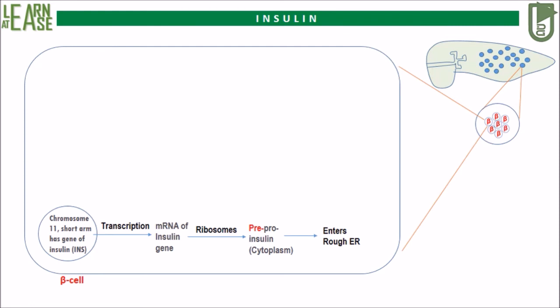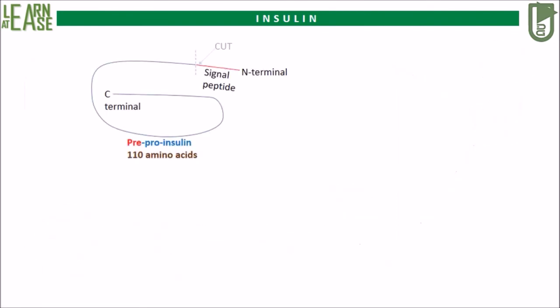The signal peptide is necessary as it allows this peptide to enter into the lumen of the rough endoplasmic reticulum where it will be converted to pro-insulin. Once it enters the rough endoplasmic reticulum, proteases will act on it to remove the signal peptide by cleaving the peptide bond. Also, the three disulfide linkages that are required are formed here.